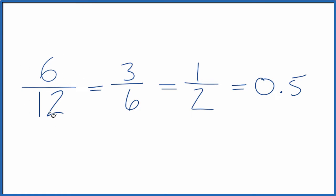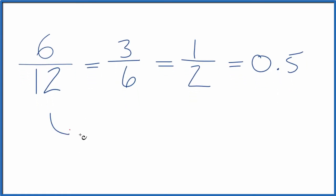You could also take and double this as well if you wanted to have another equivalent fraction. Six times two is 12, and 12 times two is 24. So that's another equivalent fraction. If you divided 12 by 24, you'd get 0.5, just like we found up here.